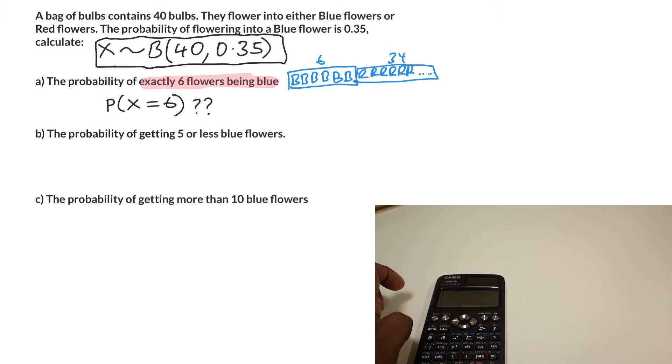Now how could you work out the probability of this happening? The probability of being blue is 0.35, so you can do 0.35 to the power of six. Then the probability of being red must be 0.65 because together that has to equal one, and that can be to the power of 34. But the one thing you need to hit spot here is this can happen in lots of different orders.